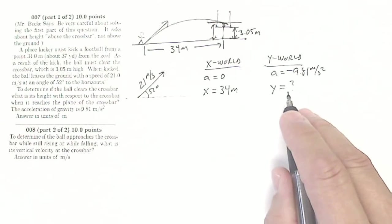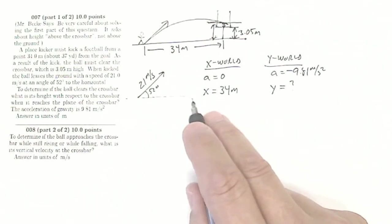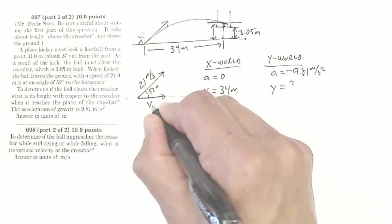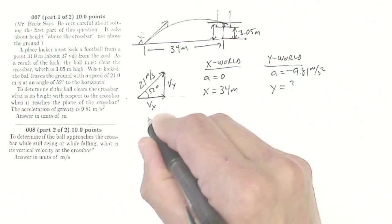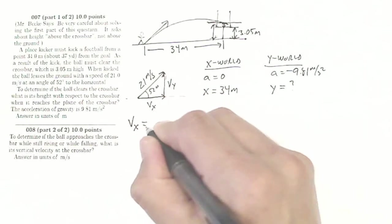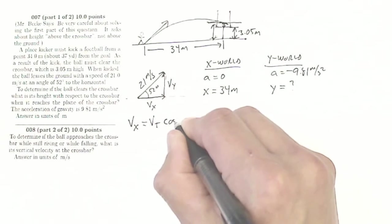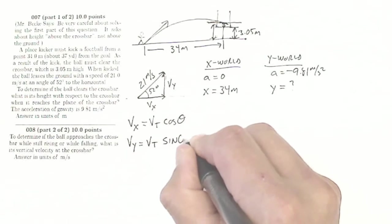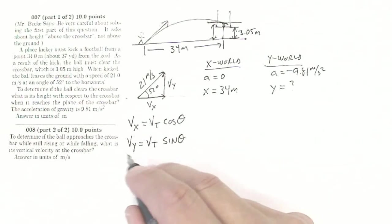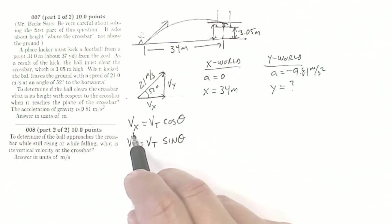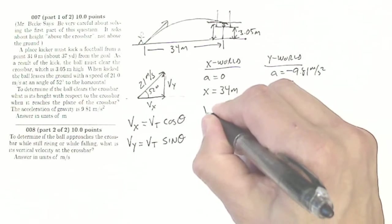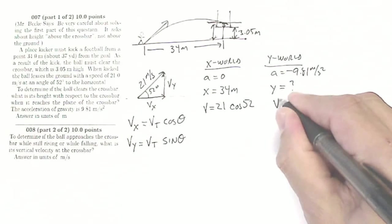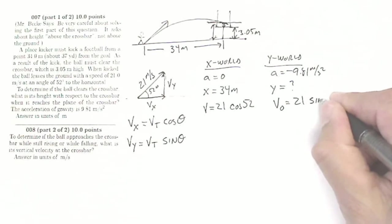I don't know my final velocity in the y-world, but I'm not looking for that and I don't need it. My initial velocity in the x-world and y-world can be gotten from the 21 meters per second, because that is made up of a velocity in the x-direction and a velocity in the y-direction. My velocity in the x-world is my total velocity times cosine of 52 degrees, and my velocity in the y-direction is my total velocity times sine of 52 degrees. This gives my initial y-velocity, and my x-velocity stays constant since there's no acceleration.